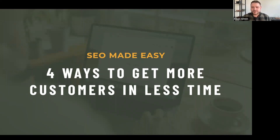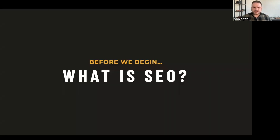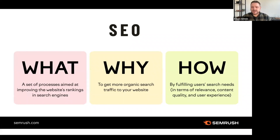We're going to move pretty quickly through a lot of big concepts. The first thing we'll talk about is what is SEO. This is a graphic from SEMrush which describes it nicely. The 'what' of SEO is a set of processes aimed at improving your website's ranking in search engines — Google, Bing, etc. The 'why' is simply to get more search traffic to your website. Successful SEO brings more people to your website and grows your business directly.